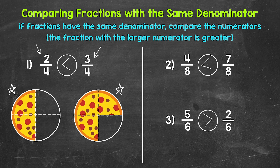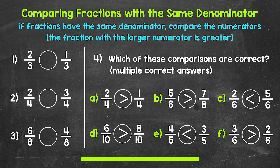Now that we've tried some practice problems together, it's time for you to try some practice problems on your own. For numbers one, two, and three, you have comparisons. For number four, find the comparisons that are correct — the comparisons that are true. There are multiple correct answers for number four, so see if you can find them all. I'll give you two minutes and then we will go over the answers.